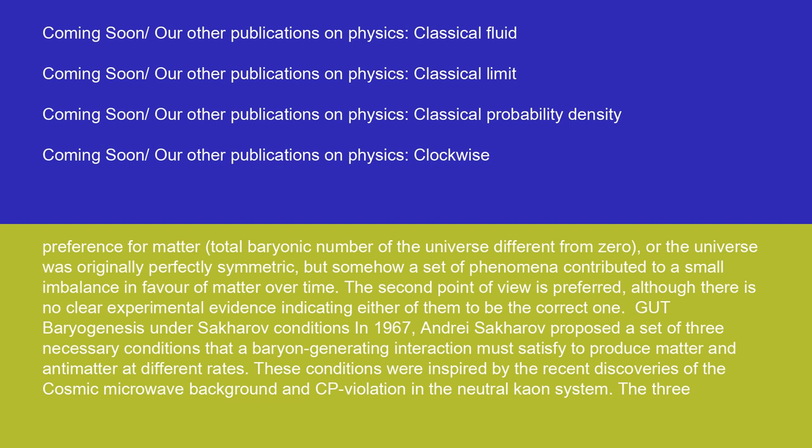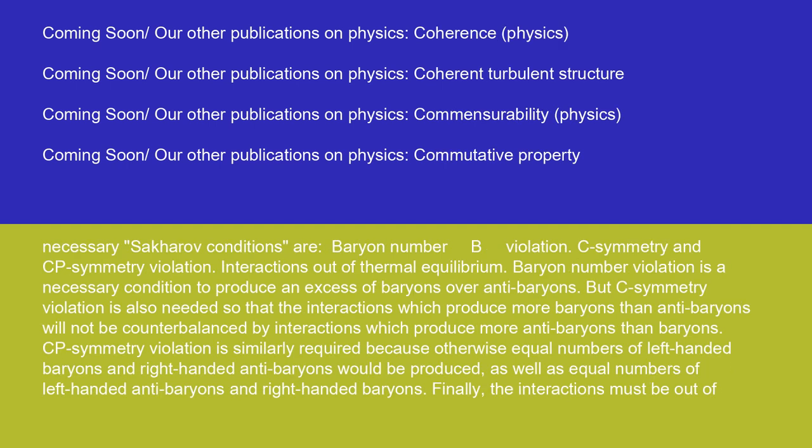The second point of view is preferred, although there is no clear experimental evidence indicating either to be correct. Under Sakharov conditions in 1967, Andrei Sakharov proposed a set of three necessary conditions that a baryon-generating interaction must satisfy to produce matter and antimatter at different rates. These conditions were inspired by the recent discoveries of the cosmic microwave background and CP violation in the neutral kaon system. The three necessary Sakharov conditions are: baryon number (B) violation, C-symmetry and CP-symmetry violation, and interactions out of thermal equilibrium.